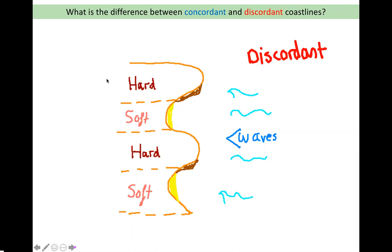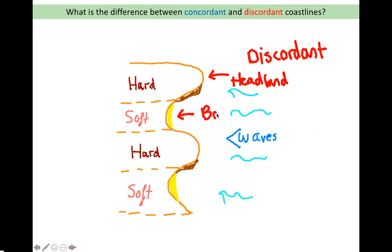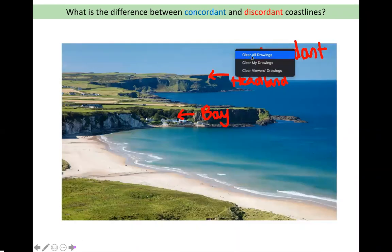In the next diagram, try to identify where the headlands are. The soft rock landform created by the soft rock eroding more quickly, because it is less resistant, is a bay. This is eroded by the waves through hydraulic action and abrasion.